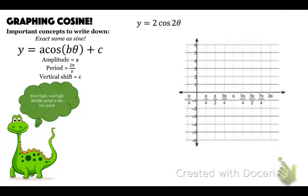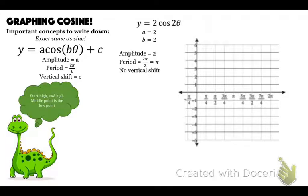Let's actually graph 2 cosine of 2 theta. A is 2, b is 2. The amplitude is 2, and the period is two pi over 2, which is pi. There's no vertical shift. I'm going to start high — up at the amplitude of 2 — and end high at 2 but at pi. The middle point is the low point, so instead of going up 2, I go down 2.